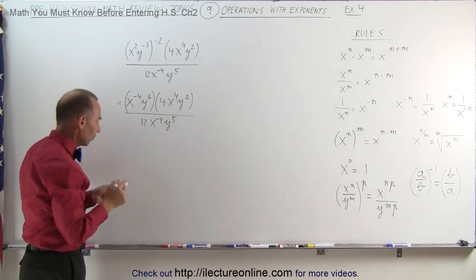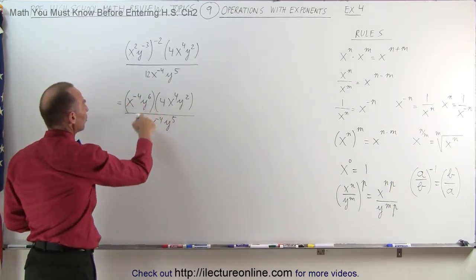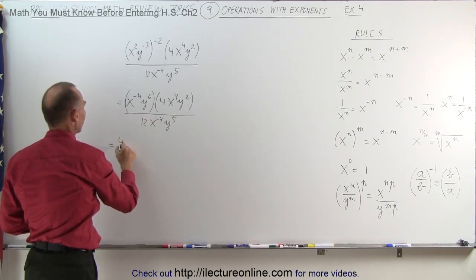Now the next thing can be done as follows. We have a 4 and a 12 that can come outside here. This is written as 4 divided by 12.